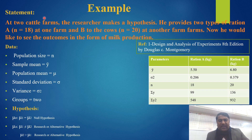Here is an example. A researcher at two cattle farms forms a hypothesis. He provides two types of ration: Ration A at one farm, which has 18 cattle, and Ration B at the other farm, which has 20 cattle. He would like to observe the outcomes in the form of milk production. The sample means are 5.50 for group A and 6.80 for group B.